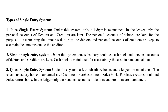The personal accounts of debtors are kept for the purpose of ascertaining the amount due from debtors. The personal accounts of creditors are kept for the amount due to creditors. So in pure single entry, only personal accounts of debtors and creditors are maintained.